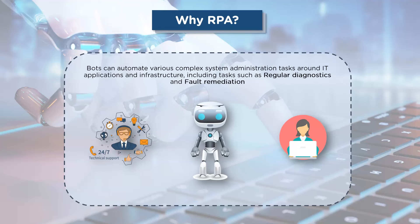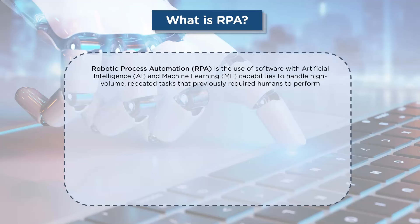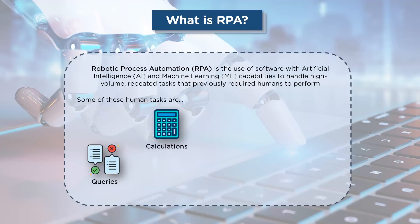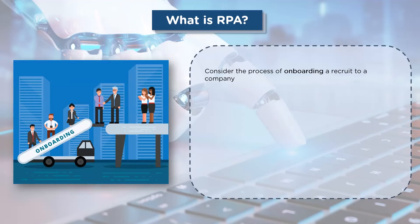All in all, RPA reduces human workload and implements tasks effectively and efficiently. So what exactly is RPA? Robotic Process Automation is the use of software with artificial intelligence and machine learning capabilities to handle high-volume repetitive tasks that previously required humans to perform. Some of these tasks include addressing queries, making complex calculations, maintenance of records, or even maintenance of transactions.